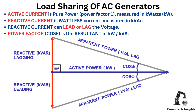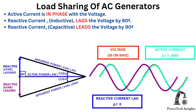Load sharing of AC generators. Active current is pure power, power factor 1, measured in kilowatts (kW). Reactive current is wattless current, measured in kVAR. Reactive current can lead or lag the voltage. Power factor cos phi is the resultant of kW/kVA. Active current is in phase with the voltage. Reactive current (inductive) lags the voltage by 90 degrees. Reactive current (capacitive) leads the voltage by 90 degrees.